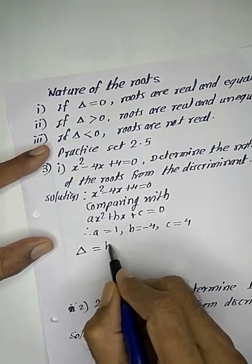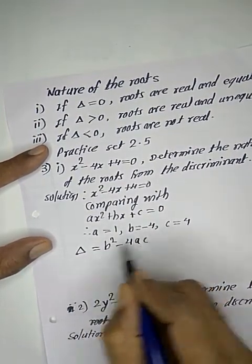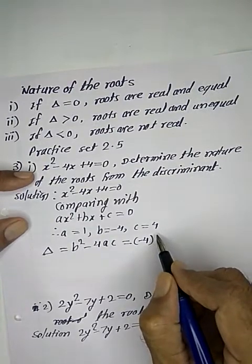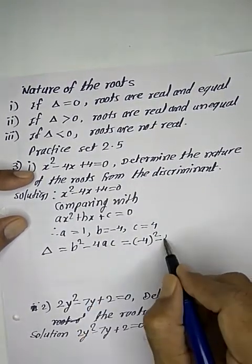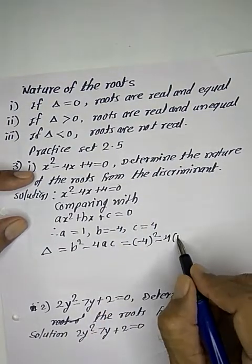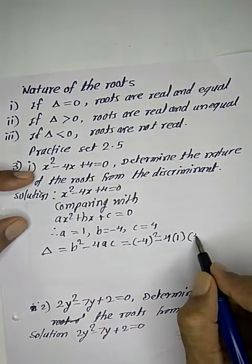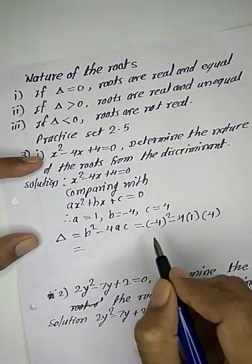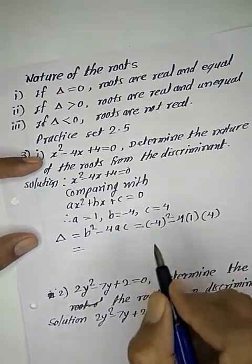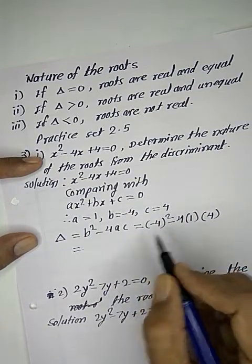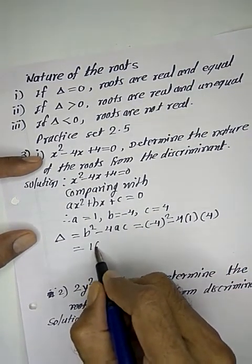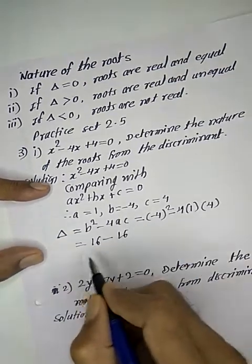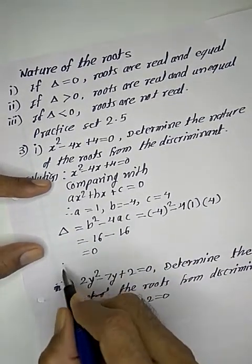Delta equals b² - 4ac. Substituting values: (-4)² - 4(1)(4) = 16 - 16 = 0. When discriminant is 0, roots are real and equal.